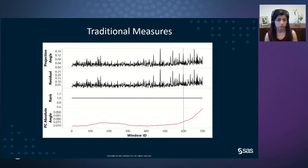We also applied the forgetting factor-based method on the turbine data and ran the example with four turbines with many combinations of forgetting factors, but we could not see the same trend in the PC absolute angle change as we saw in the sliding window-based method. Also, we monitored the traditional measures like projection angle, residual, and rank — none of these measures could detect the degradation, as you can see in this graph.